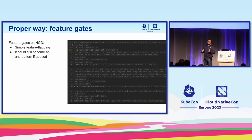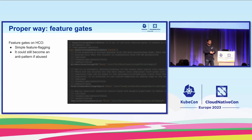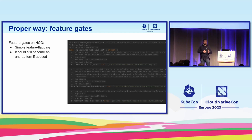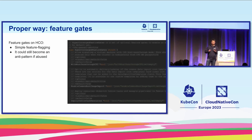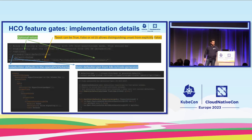The proper way to expose a feature is a feature gate. In HCO, feature gates are simple booleans to enable or disable a feature. However, it can become an anti-pattern if abused — if you have a huge list of booleans where the value of one contradicts another, or there are relations between different booleans, it becomes an anti-pattern. We must ensure we only expose what the cluster admin really needs to tune.